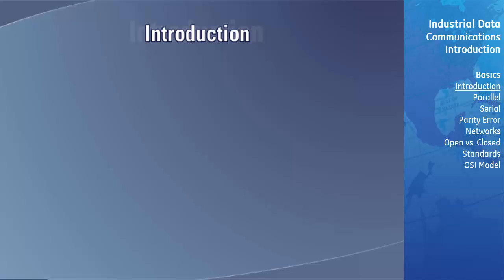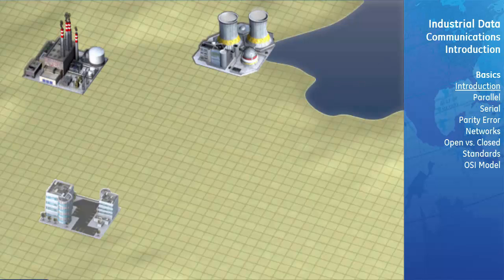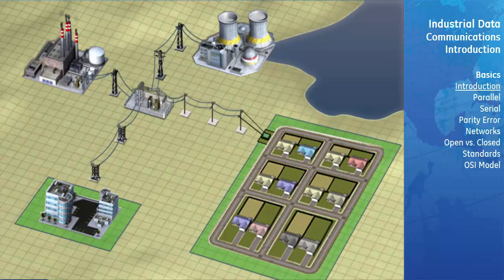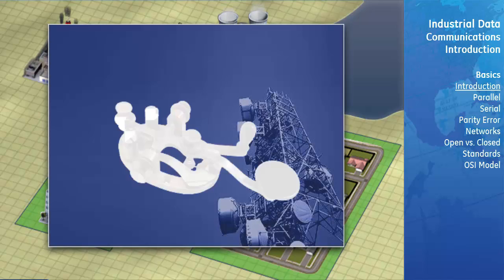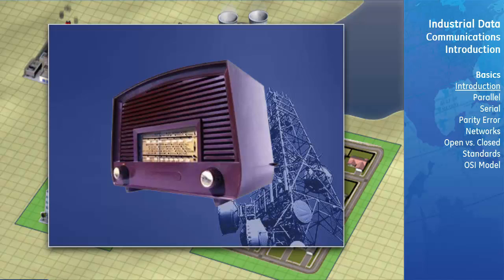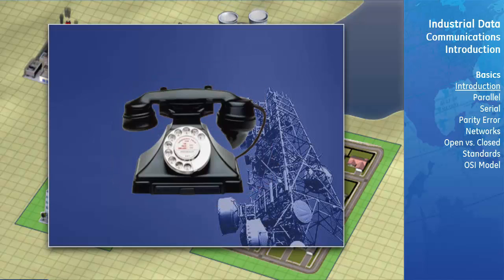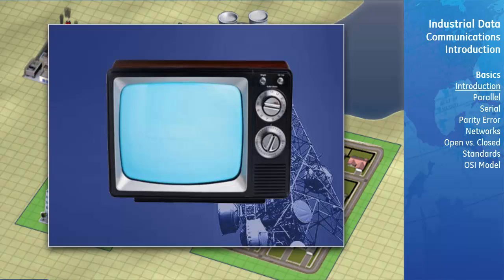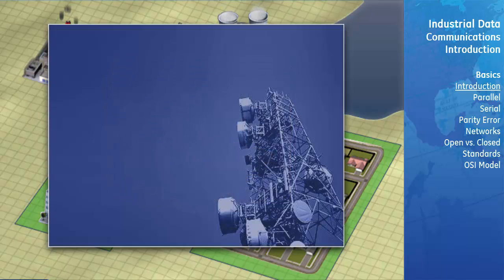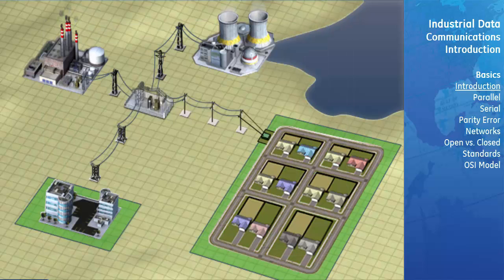There has always been a need to transfer information. The main objective of a data communication system is to transfer information from one place to another. Modern data communications technology can trace its heritage back to the 1800s with the development of the telegraph. Data communications technologies, strategies, and equipment continue to develop for an ever-expanding list of applications, from the common telephone to space exploration. This course will focus on the modern data communication technologies commonly used in utility and industrial power system applications.